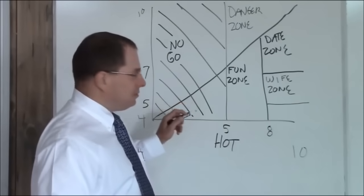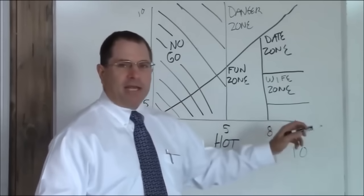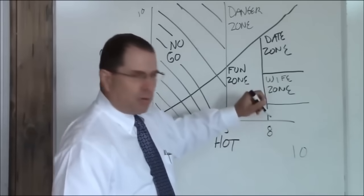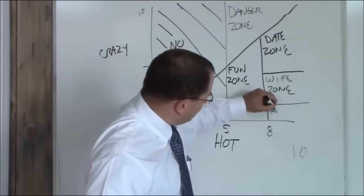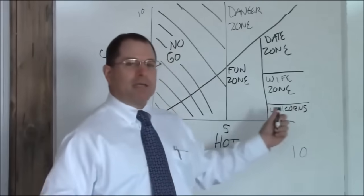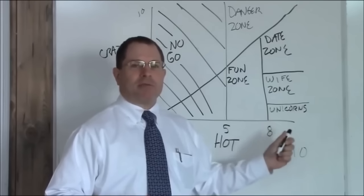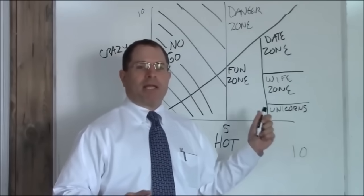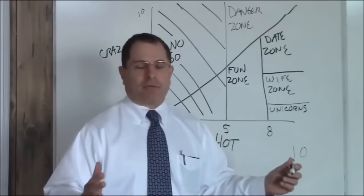Now, below a five crazy and above an eight hot, this is your unicorn zone. These things don't exist. If you find a unicorn, please capture it safely, keep it alive. We'd like to study it and maybe look at how to replicate that.